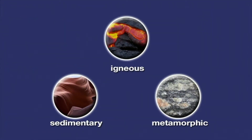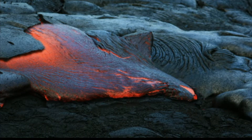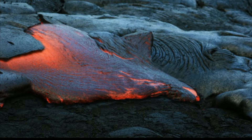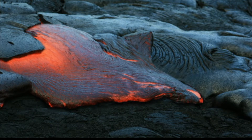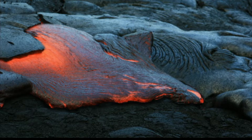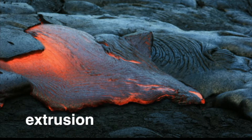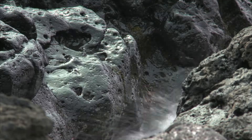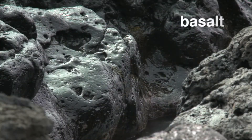The three main types of rock are sedimentary, metamorphic, and igneous. All rocks begin as igneous rocks. The high pressure of Earth's interior squeezes or extrudes magma, becoming lava as it reaches Earth's surface. As lava cools and solidifies, it becomes igneous rock, such as basalt.